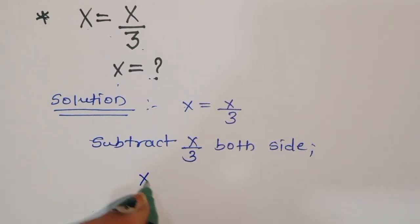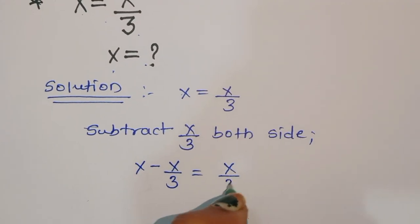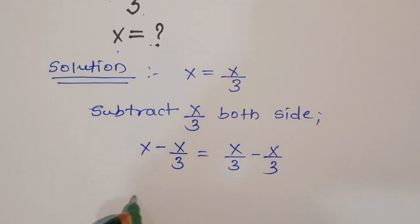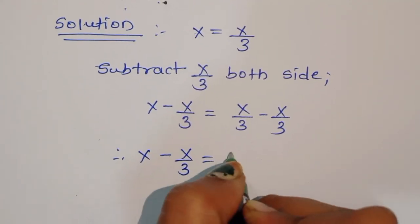We will get x minus x/3 is equal to x/3 minus x/3. Therefore, x minus x/3 is equal to 0.